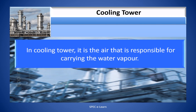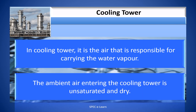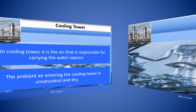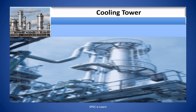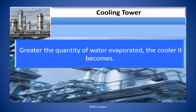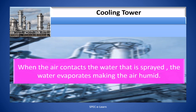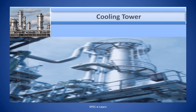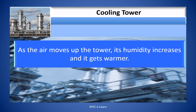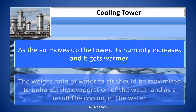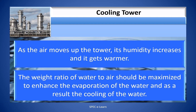In the cooling tower, it is air that is responsible for carrying the water vapor. The ambient air entering is unsaturated and dry. The greater the quantity of water evaporated, the cooler it becomes. To accomplish this, the flow of air — which carries away the vapor — should be increased. When air contacts the sprayed water, the water evaporates, making the air humid. As the air moves up the tower, its humidity increases and it gets warmer. The water-to-air mass ratio should be maximized to enhance cooling.